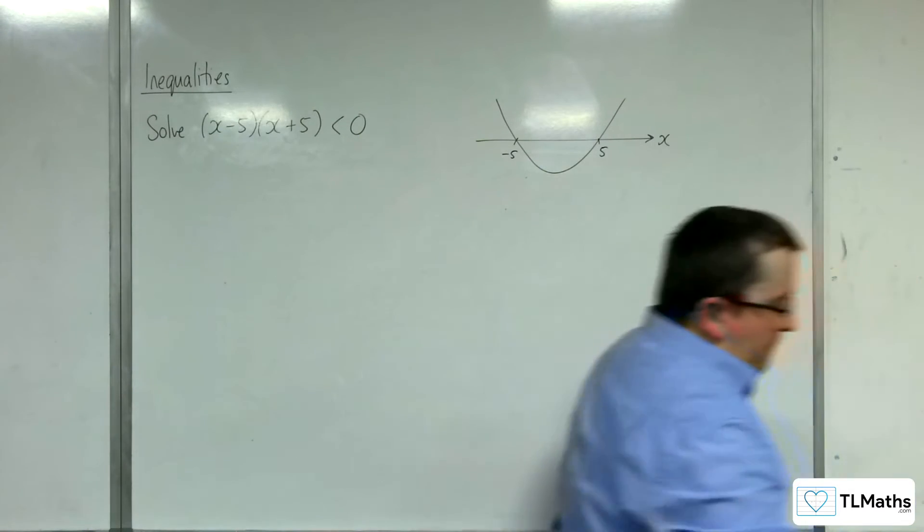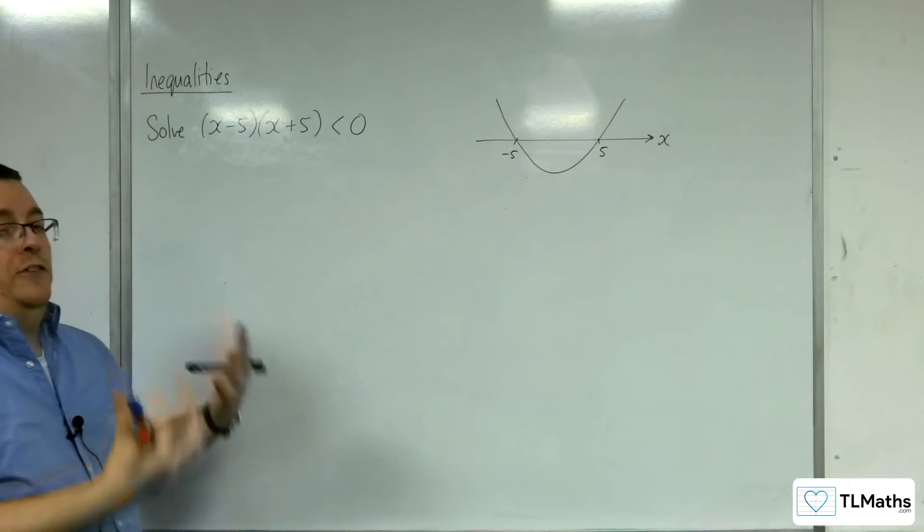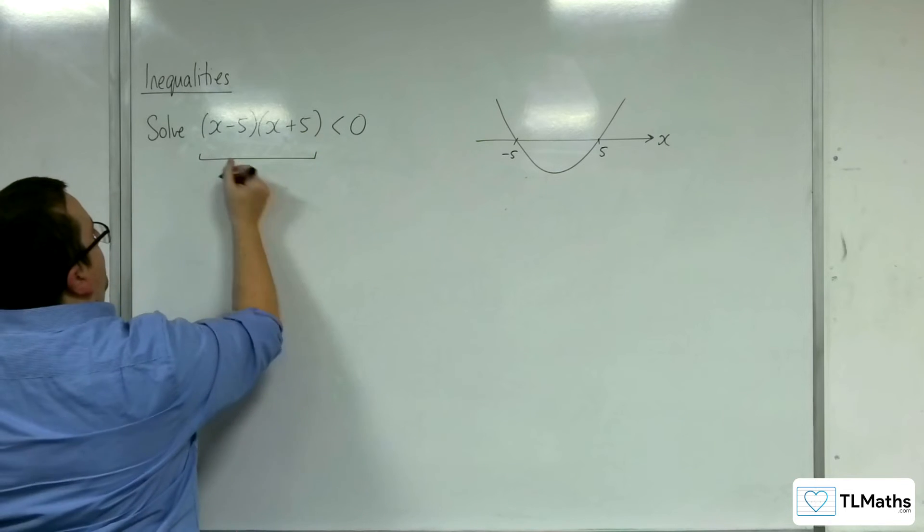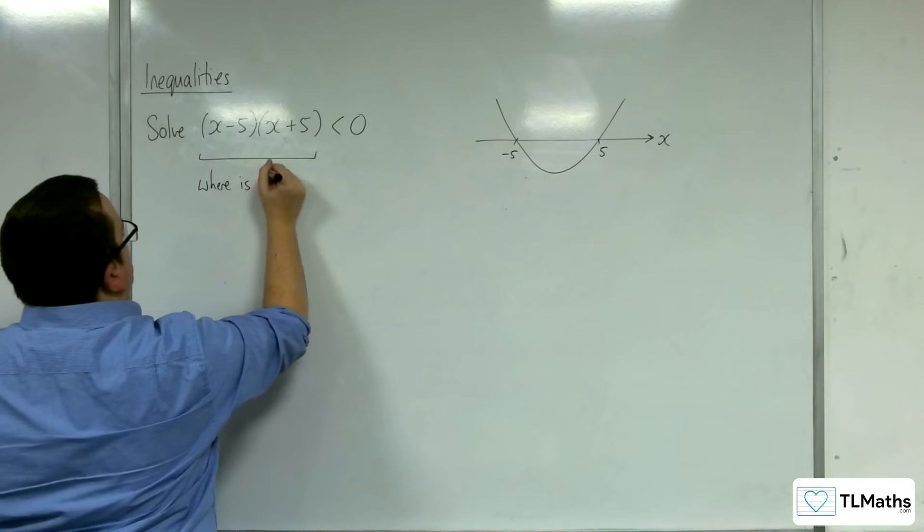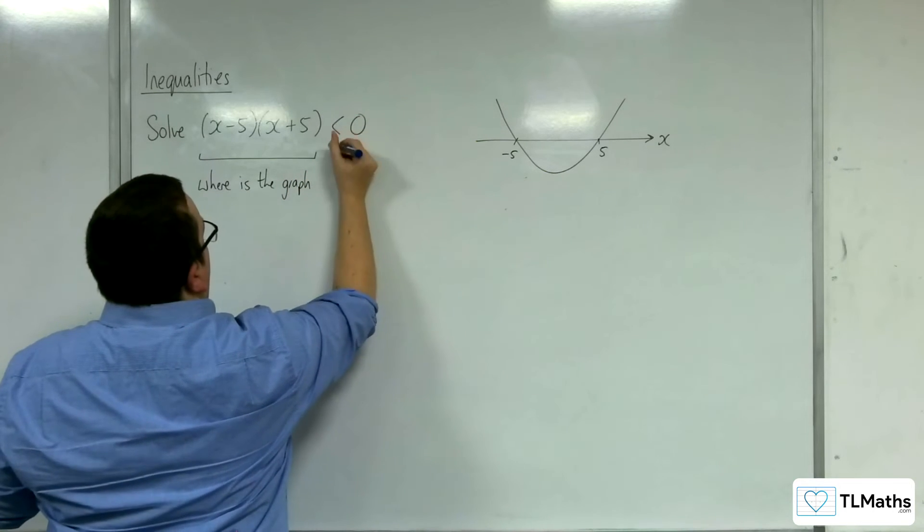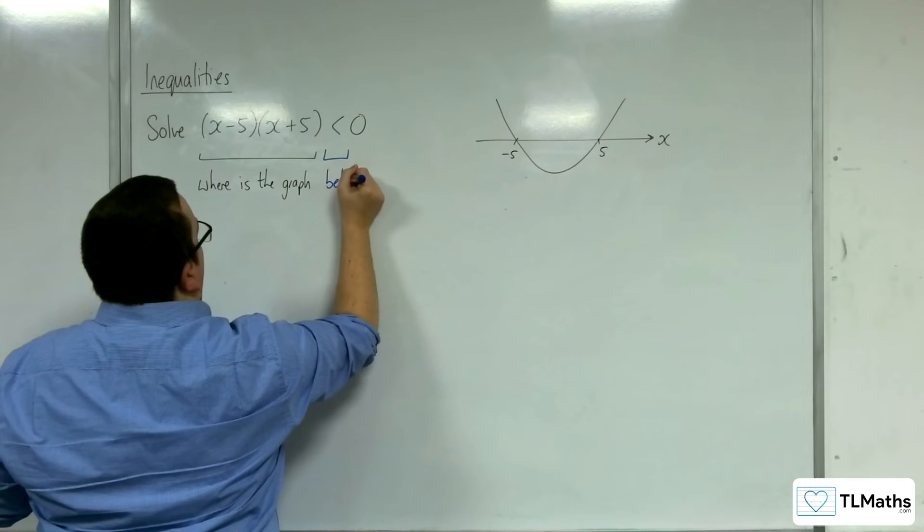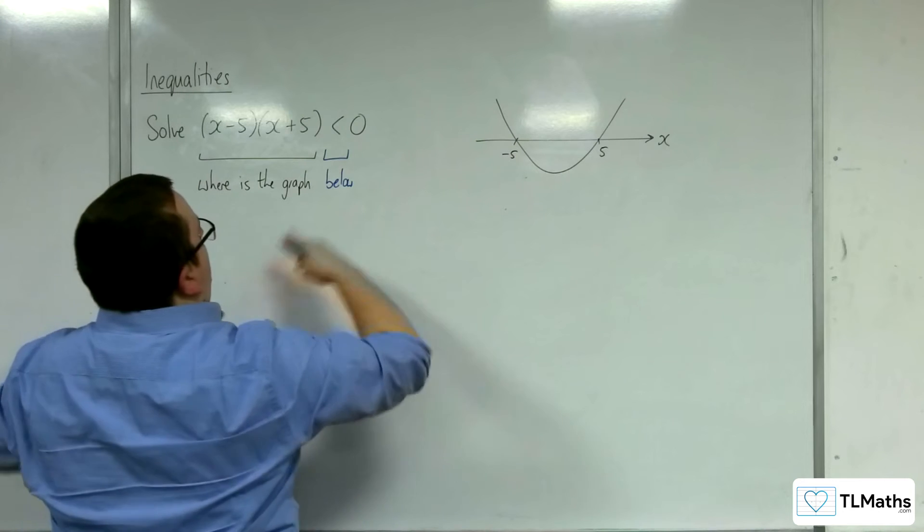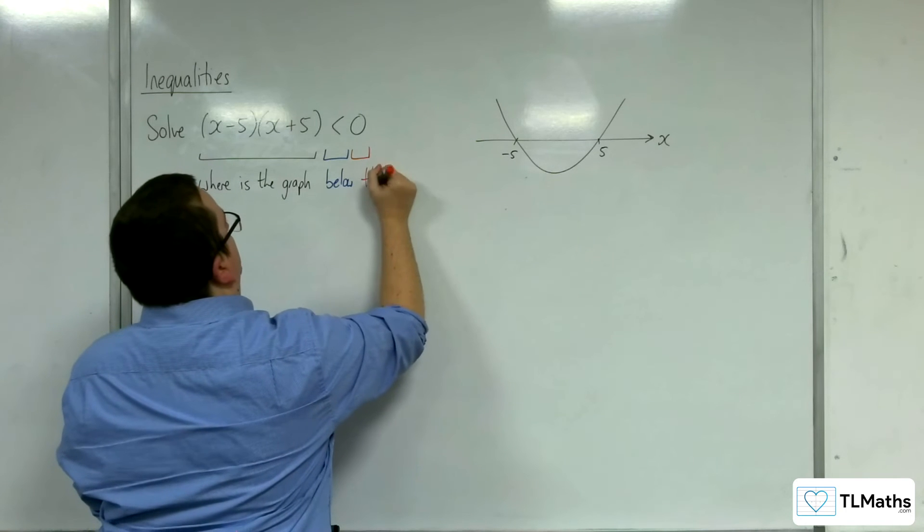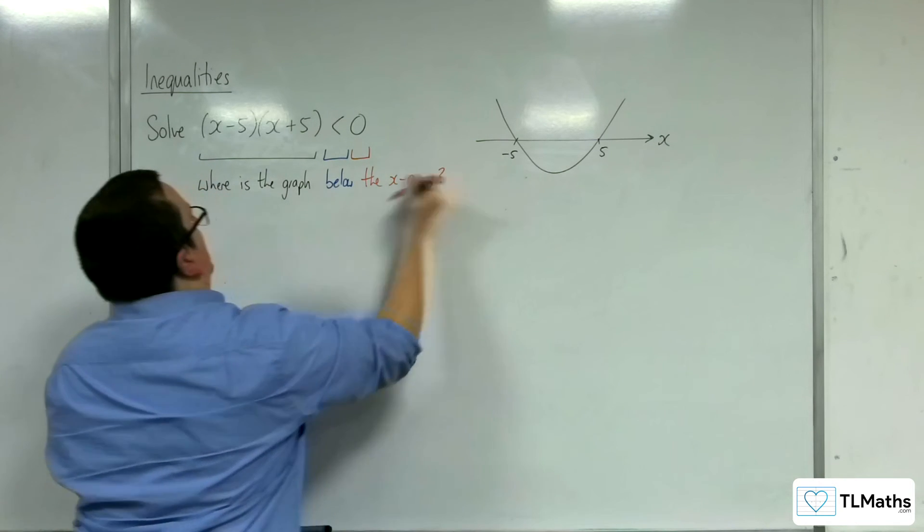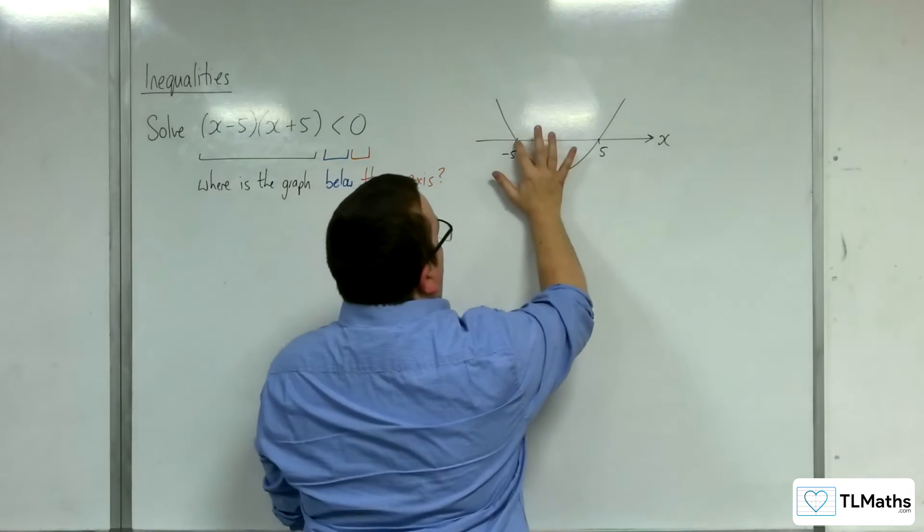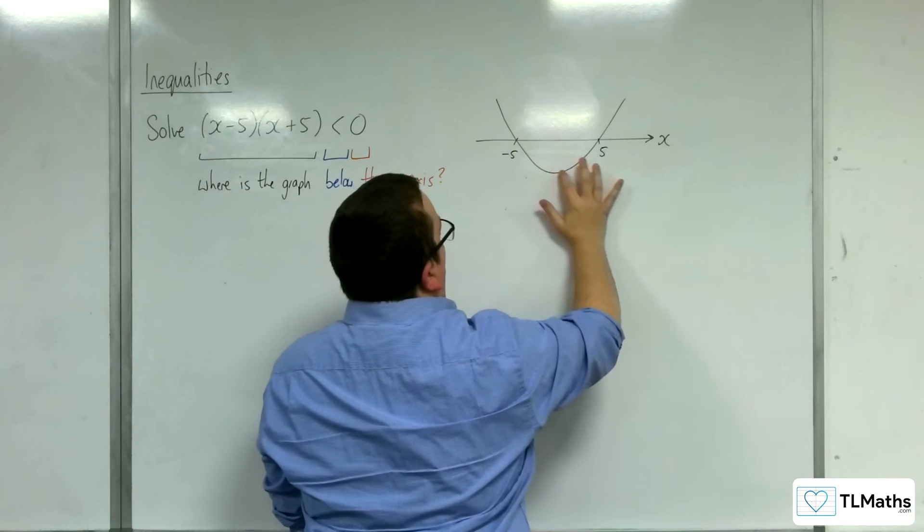Now, the inequality is effectively asking you a question. It's asking you, where is the graph? Where is the graph? And this less than means below. And this zero is effectively meaning y equals zero, which is the x-axis. Where is this graph below the x-axis? You can see that it's below the x-axis here, for this portion of the graph.